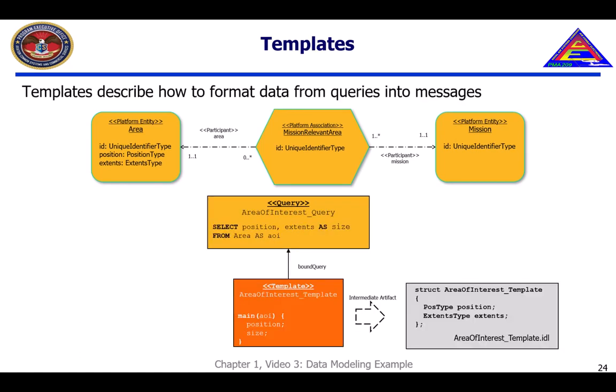The FACE data architecture uses templates to specify the message format in which data identified by a query will be presented. A template is associated with a query through a bound query relationship. In this example, a template for a simple area of interest query formats the area of interest into a struct consisting of a position and extents, each identified by the platform data types detailed previously.